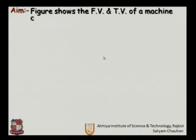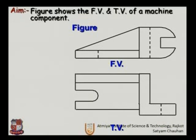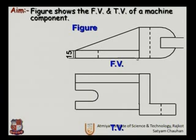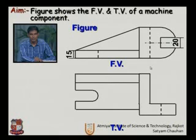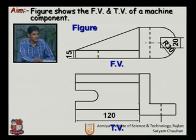Let us take one more example. This is another method to create an isometric view where two sections are given. It is a component of a machine with a given front view and top view. In this method, we separate the views — whatever views are given, we separate them and use each individually. The dimensions are: height is 15, radius is 30, and length is 100. Let us see how to draw this isometric view.